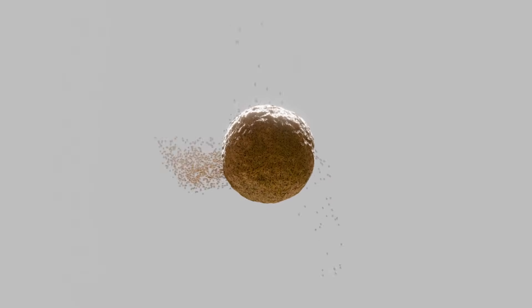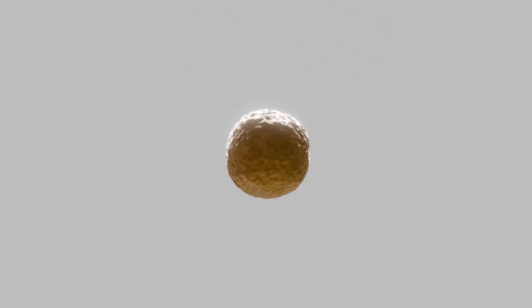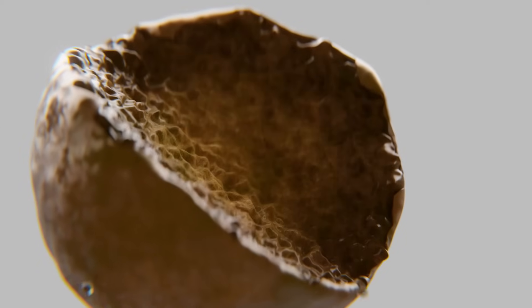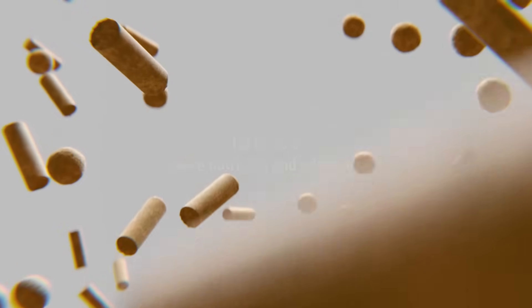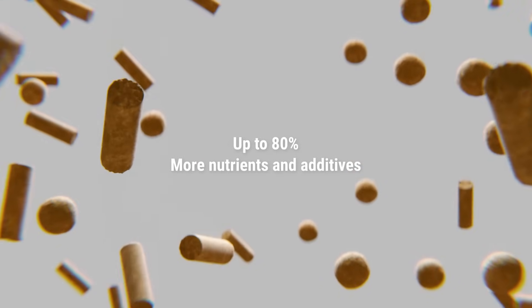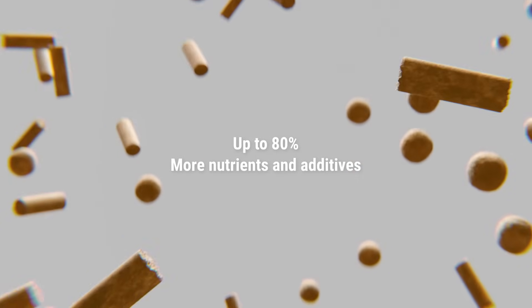Next, the vacuum is broken by letting air back in, which pushes the additives deep into the core of the kibbles. This way, producers can add up to 80% more functional additives, such as lipids and medicines, without losses.